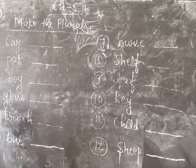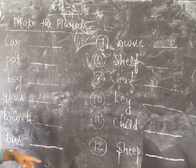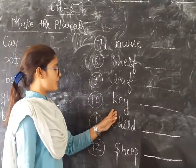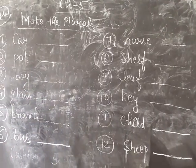The words are: card, court, boy, glass, branch, bus, leaf, tea, child and sheep. So write down in your copy and complete it. Thank you.